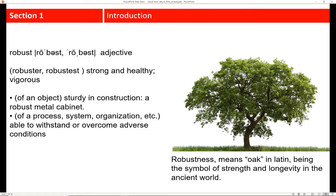If we're talking about an object, we could mean it's sturdy in construction, like a robust metal cabinet. We can also consider the robustness of a process, system, or organization.